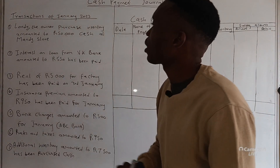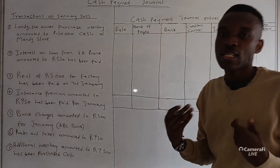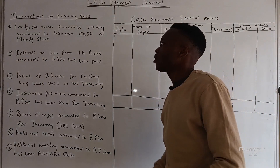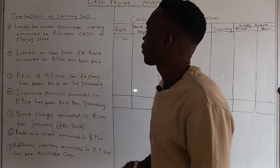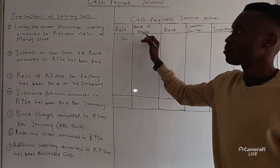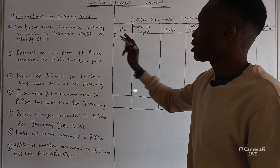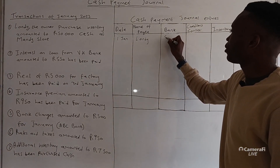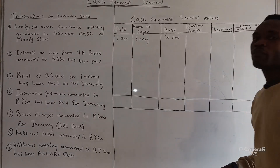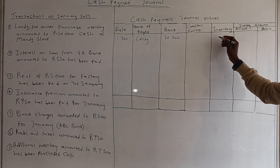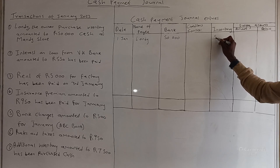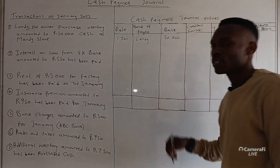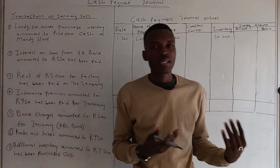Transaction one: the owner purchased inventory amounting to 50,000 cash at Mandi Store. When dealing with a cash payment journal we are looking at cash transactions only. The name of payee is Mandi Store and the amount is 50,000. Creditors control is not affected because we purchased inventory directly for cash, so we record it under the inventory account. Remember, creditors control is related to suppliers when we purchase on credit.